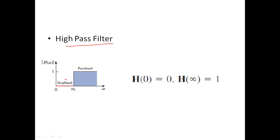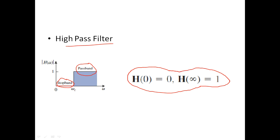Next comes the high pass filter, which is the reverse case of the low pass filter. From zero to omega_c it will not allow the signal to pass — this is the stop band. From omega_c to higher values it will allow the signal — this is the pass band. To check if a circuit is a high pass filter, calculate the transfer function and verify that H(0) = 0 and H(∞) = 1.